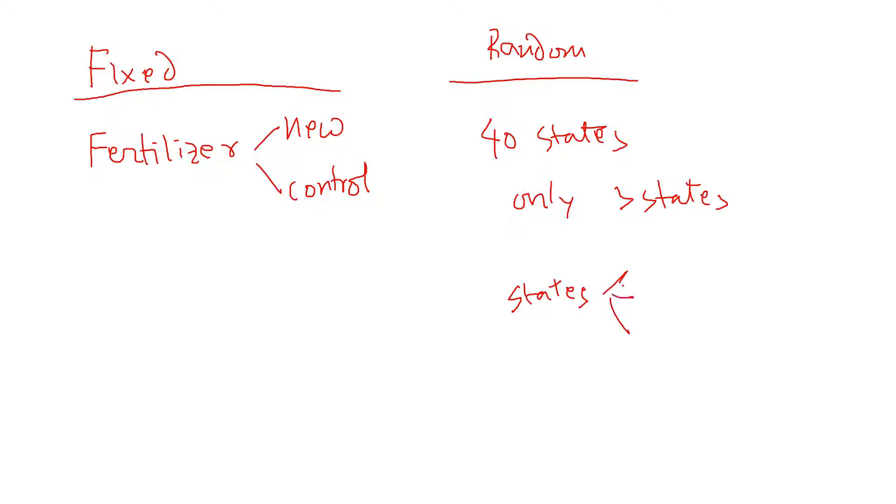That has three levels - I don't know which three are selected, but we can say state 1, 2, and 3. So then this factor, states, will be considered as a random factor. Generally, the random factor is not our interest.